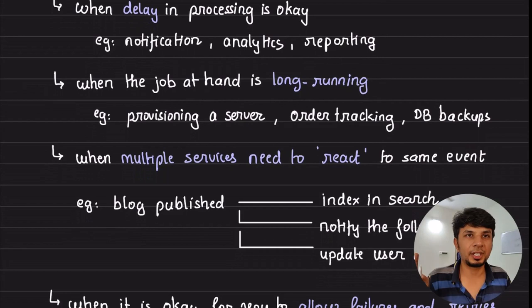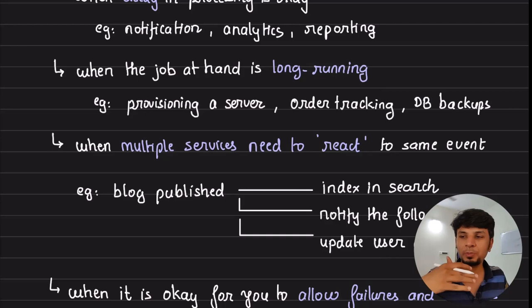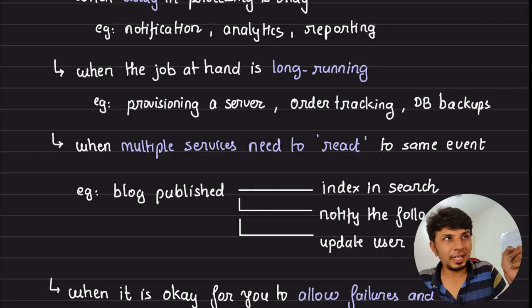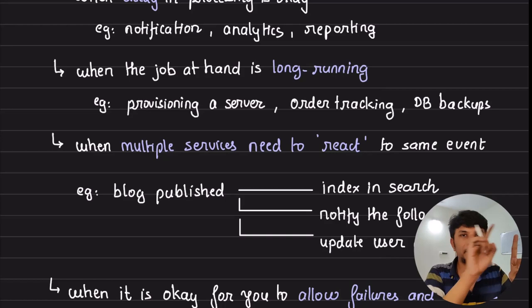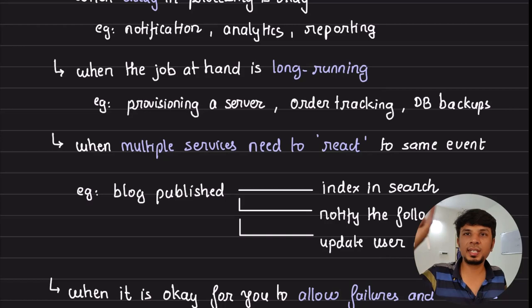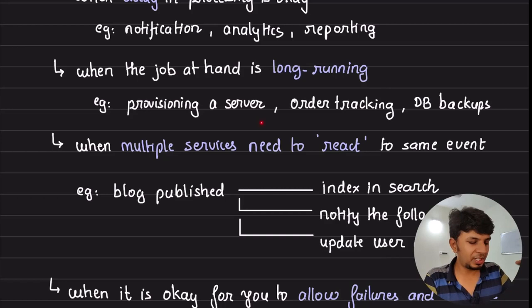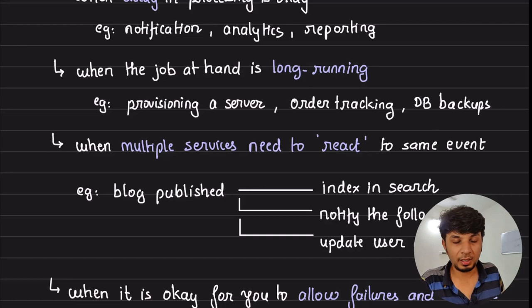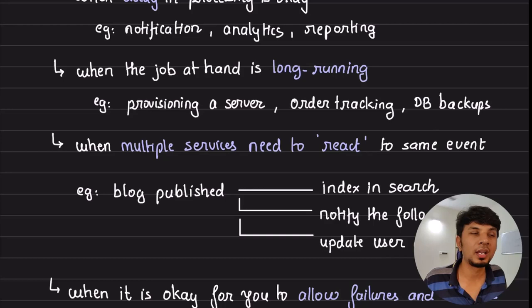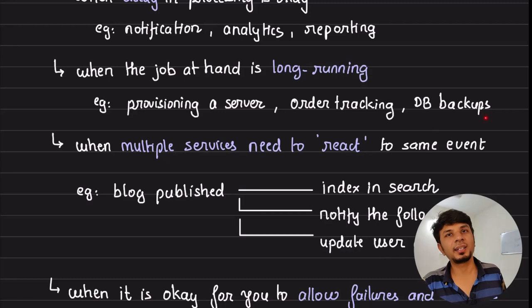The second reason to use async is when the job is long-running. For example, provisioning an EC2 server might take 10 minutes — will your user wait for a 10-minute API response? No. Instead, the user submits a request, the API server immediately responds 'acknowledged,' sends a message to the broker, and a provisioning service picks it up and creates the actual EC2 server. Other examples: tracking orders, database backups that take one to three hours — you cannot have an HTTP request open for one hour.